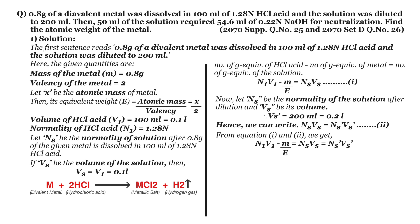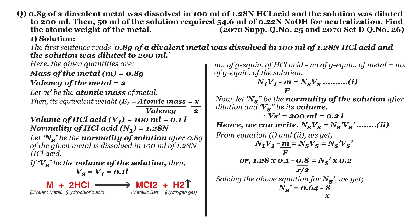Putting the values of N1, V1, M, E, and Vs' into the equation, we get: 1.28 × 0.1 − 0.8/(x/2) = Ns' × 0.2. Solving for Ns' we get Ns' equals 0.64 − 8/x. That is, the normality of the diluted solution is (0.64 − 8/x) N.